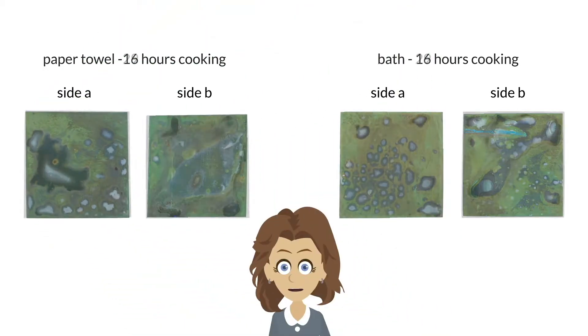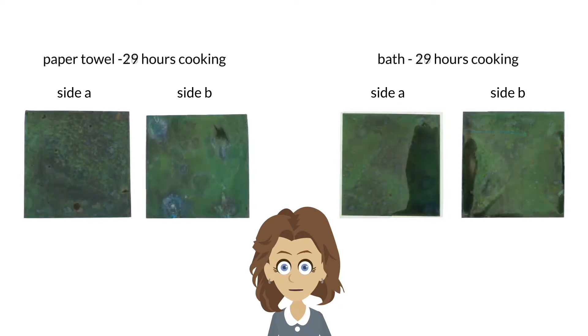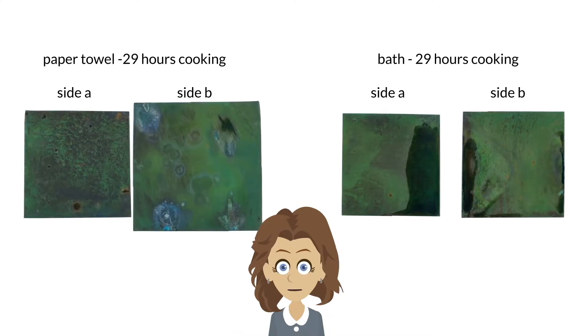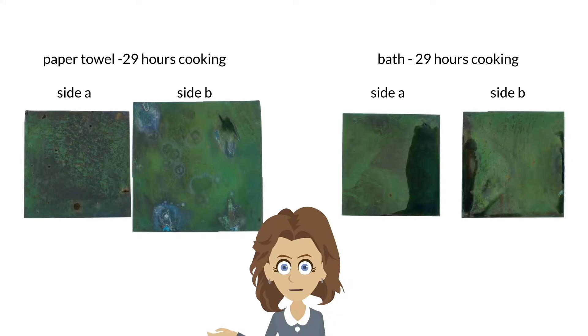At 29 hours, the heavenly bodies have retreated, replaced by a gloomy, moody, dark green, with the exception of side B on the paper towel fume chamber sample, which is a bit brighter, with flashes of blue.